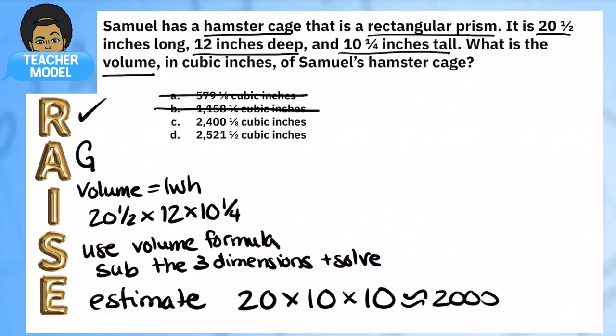All right, so let's really do it. I always start by rewriting my formula: volume equals length times width times height. I'm going to write in my three dimensions. I don't have to worry about the order of them. I'm going to turn them into fractions so I can multiply them.